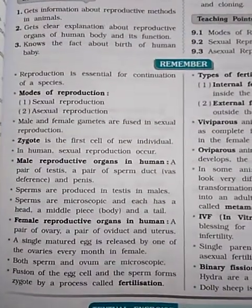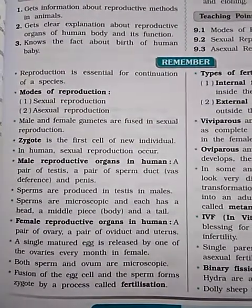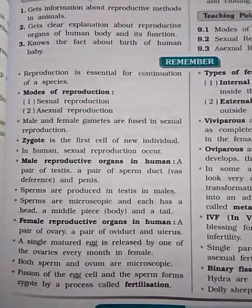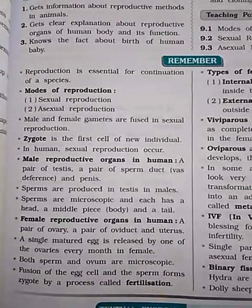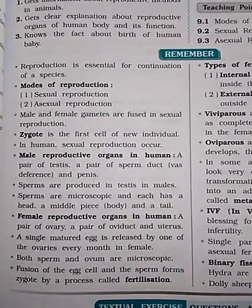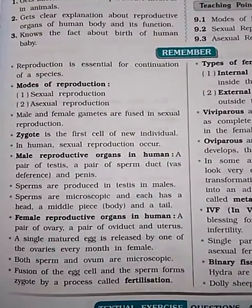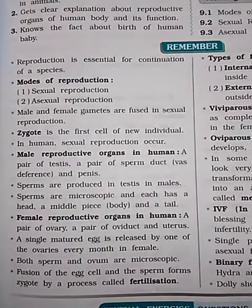Now these are remember points. Reproduction is essential for continuation of species. We have to reproduce for species to be saved — reproduction is very important.